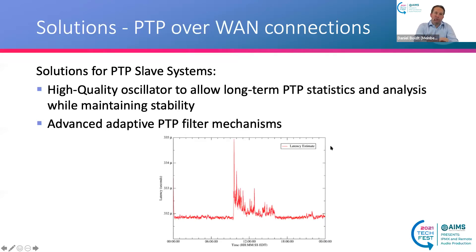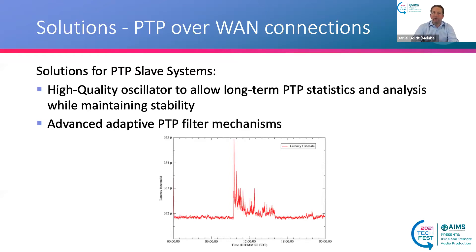There are also solutions that can be built directly into PTP slave systems. A high-quality oscillator allows long-term PTP statistics — you can collect a lot of packets, do long-term measurements of the incoming PTP, and analyze the traffic, while the stability of the local clock is maintained by the oscillator. The second approach is using adaptive PTP filter mechanisms so that you can adapt to certain scenarios.